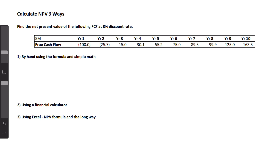Let's imagine we have an example here with the free cash flow in millions from year 1 to year 10. Let's find the net present value using an 8% discount rate.